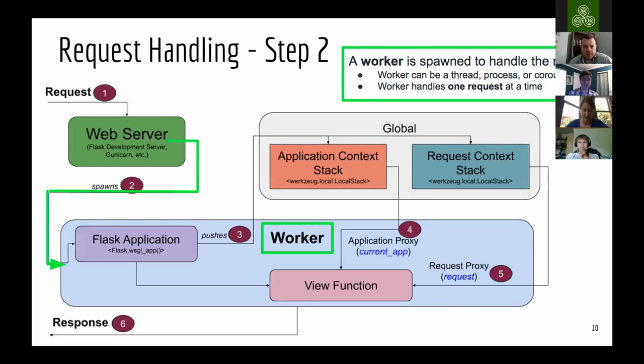The next step is that the web server is going to spawn a worker to handle that request. The worker could be a thread, a process, or a coroutine. The key thing to remember is that the worker is going to be handling one request at a time — that request comes in and it's the worker's responsibility to handle that single request. For example, if you're using the Flask development server, the worker would be a thread with the default configuration.